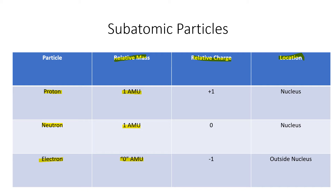To put this in a non-chemistry example: imagine you step on a scale and a butterfly comes and lands on your shoulder. Is that butterfly going to change the weight you see on the scale? Probably not — it's very small. But does that butterfly have its own independent mass? Sure it does. It's just that when you combine your mass and the butterfly's mass, it's pretty much just your mass. That's what we're seeing with protons and neutrons compared to electrons — the electron just doesn't have enough weight to really worry about.